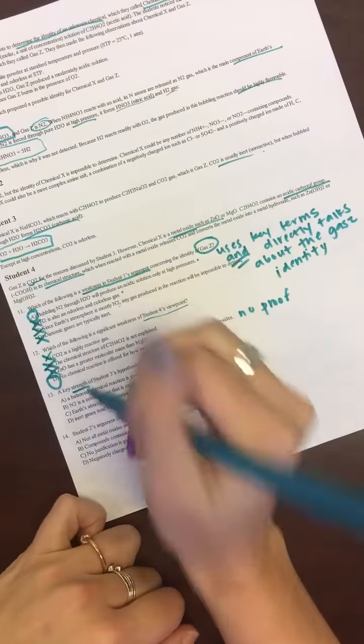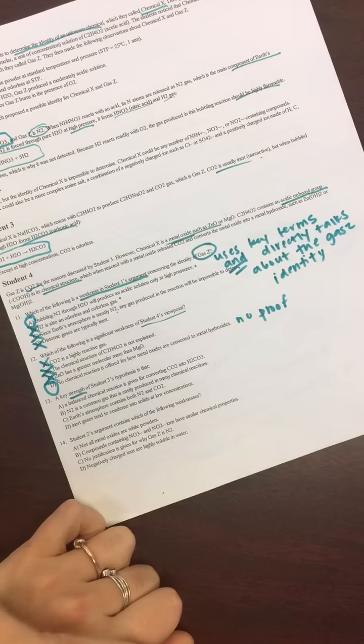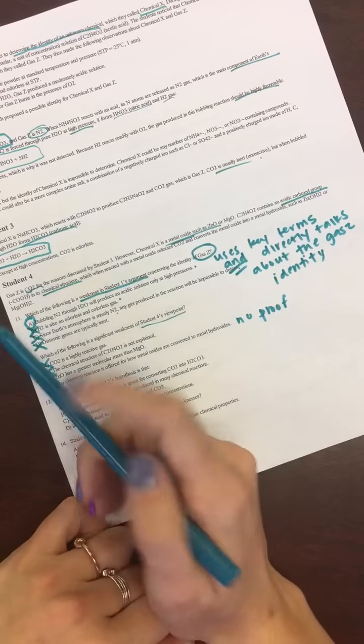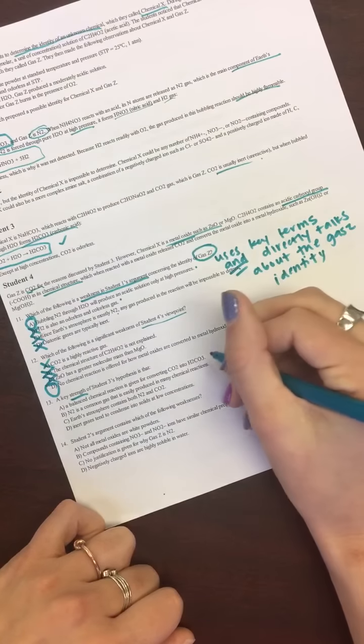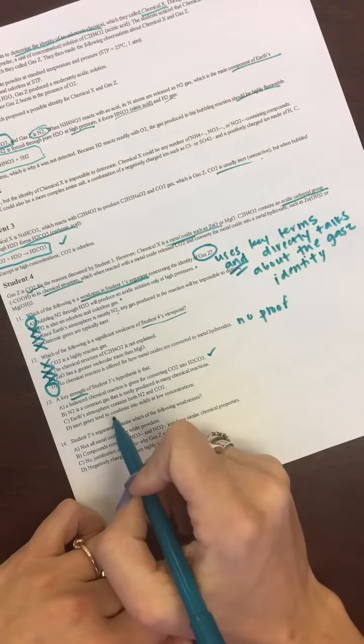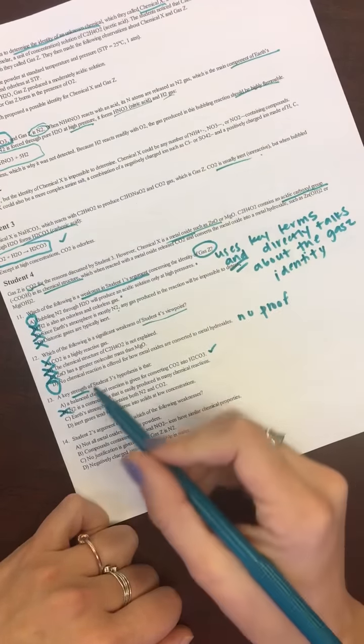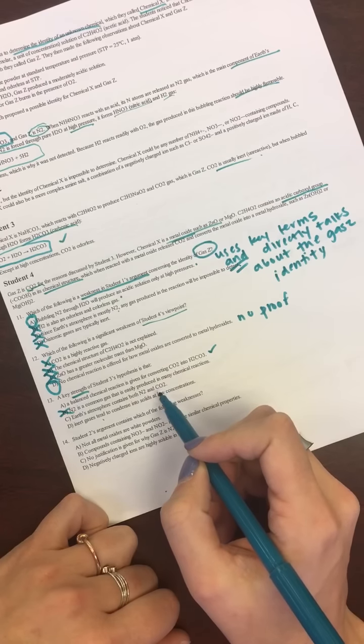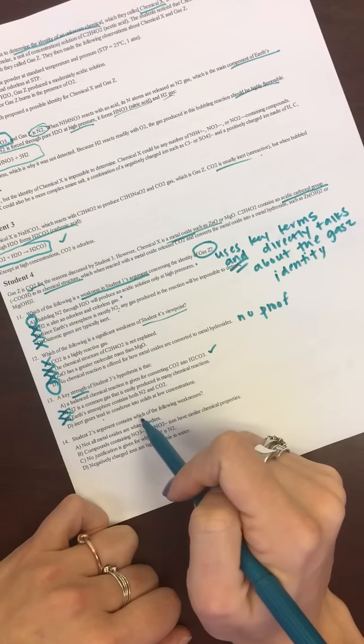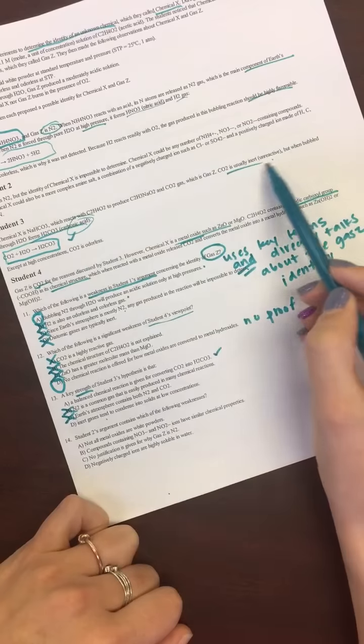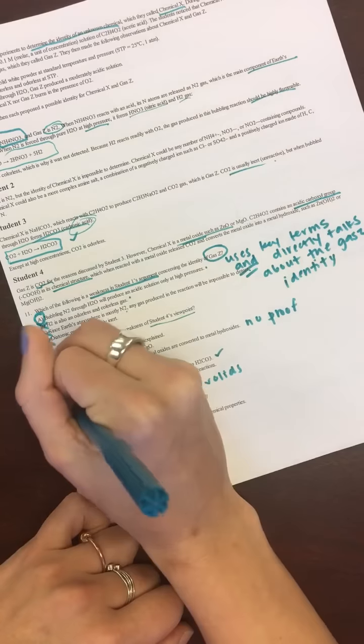Alright. A key strength. So, why is this good of student 3's hypothesis? Is that a balanced chemical reaction is given for converting CO2 into H2. C. Two H's. Three O's. Yep. So, there's a balanced chemical reaction. That's something that actually does happen. N2 is a common gas that is easily produced. We don't talk about N2 with this scientist, so that's a no. Earth's atmosphere contains both N2 and CO2. Again, we don't talk about that. Inert gases tend to condense into solids at low concentrations. We don't talk about any of those. So, we never mention solids, so that means your answer is A.